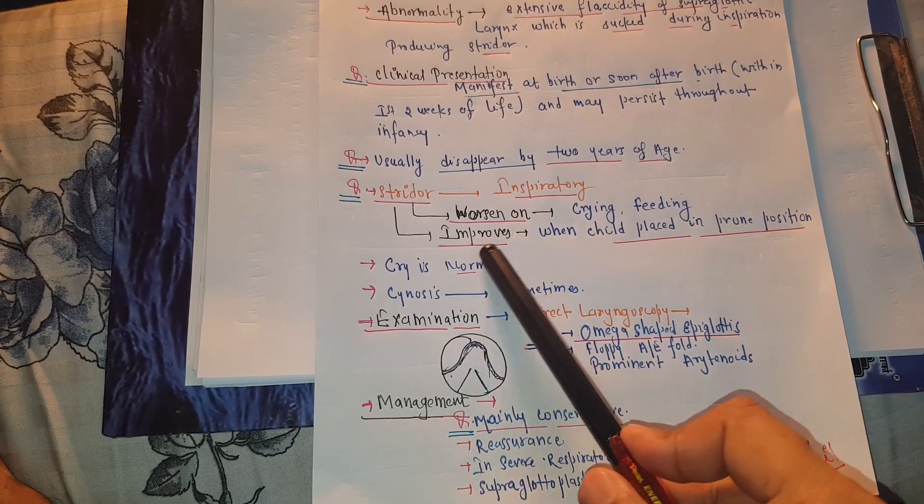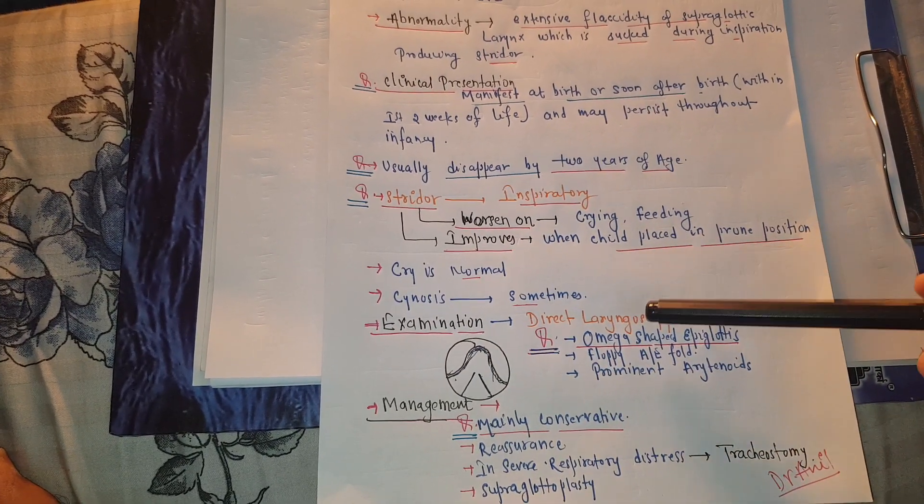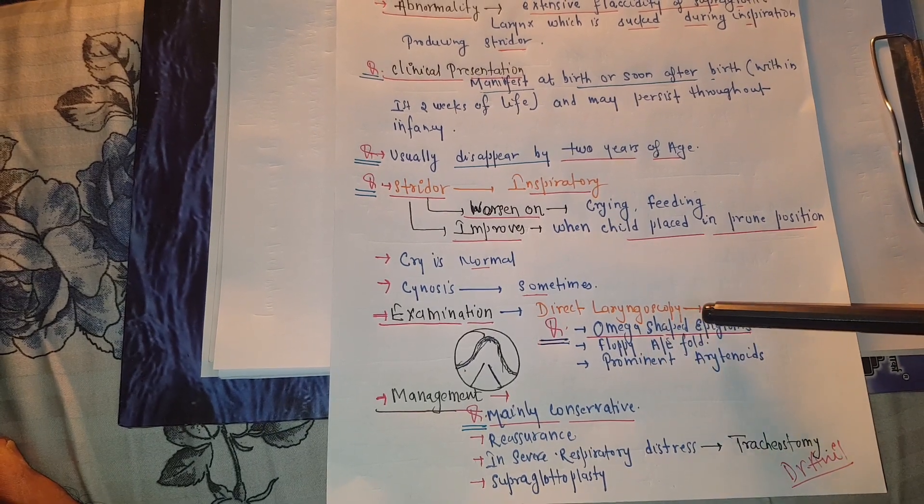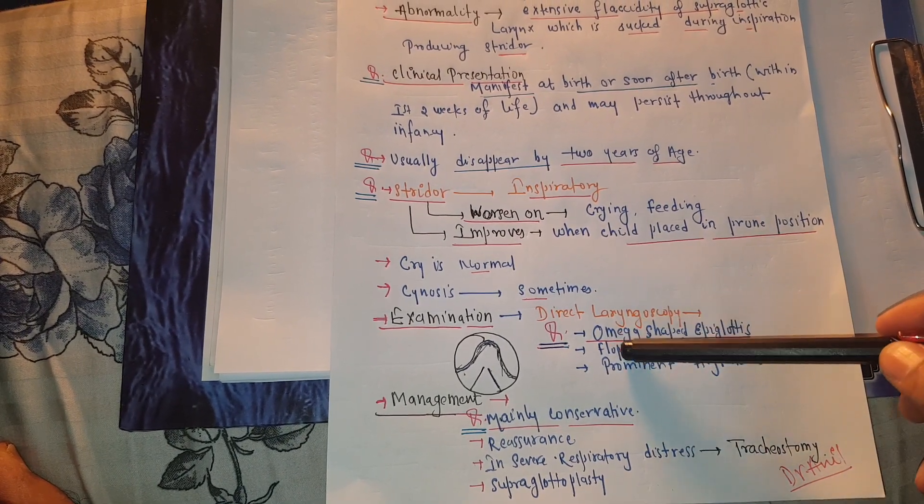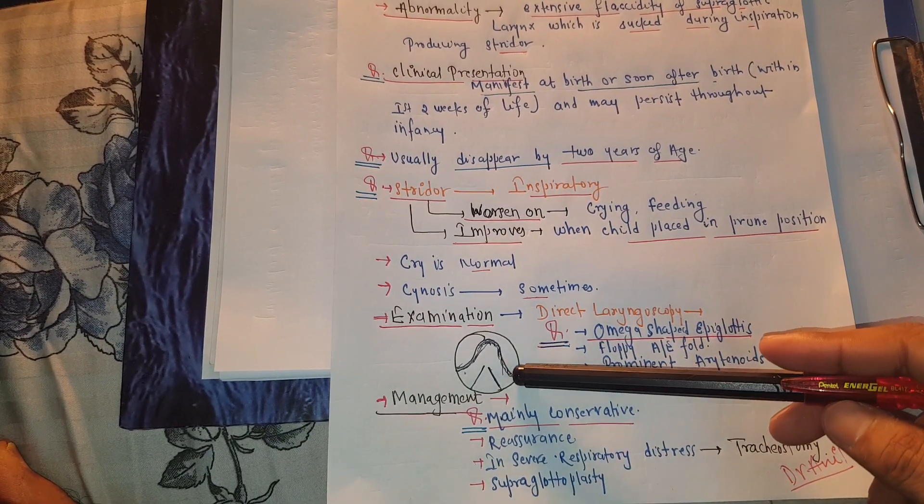The cry of the child is normal. Cyanosis is sometimes seen. On examination by direct laryngoscopy, the epiglottis appears like omega, so it's known as an omega-shaped epiglottis.